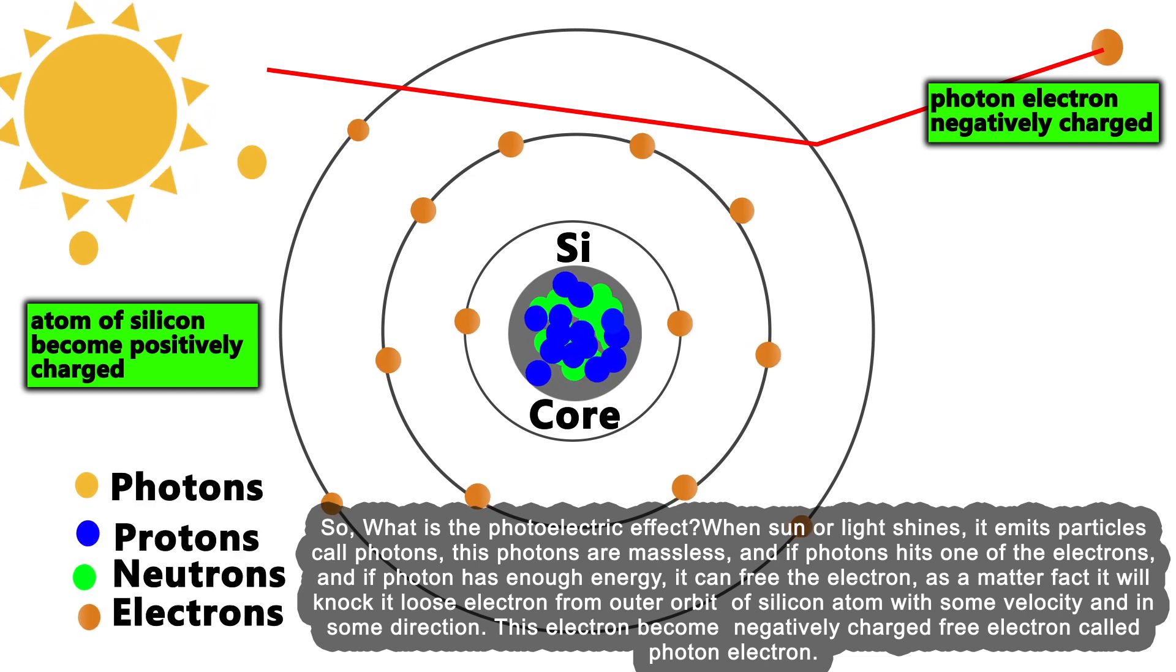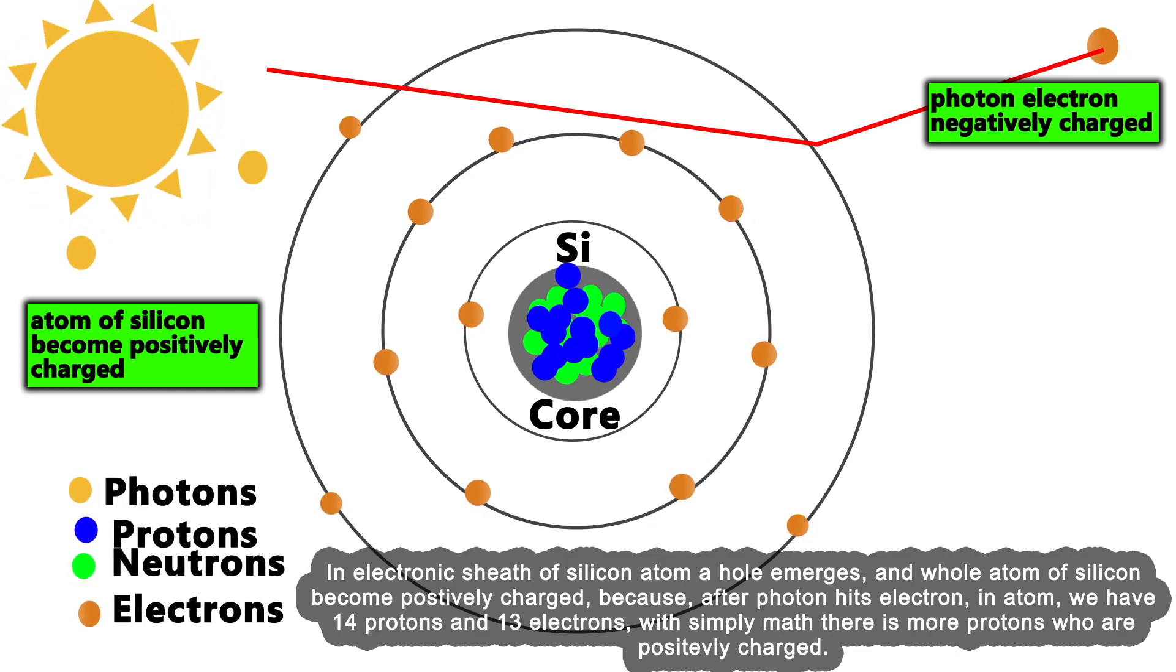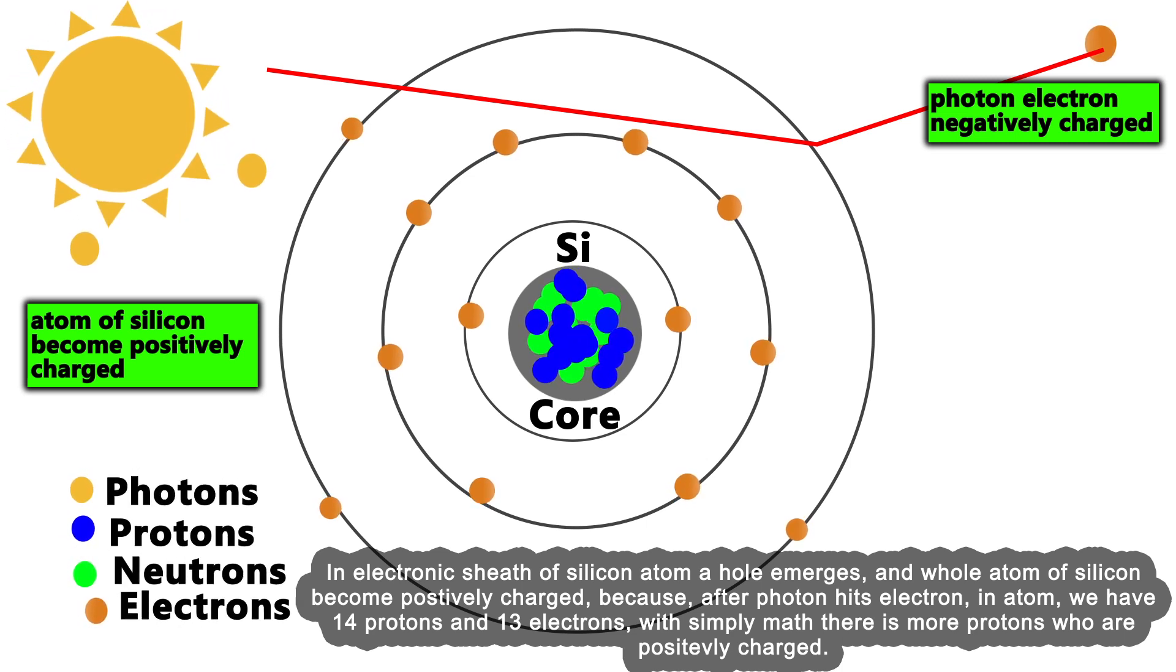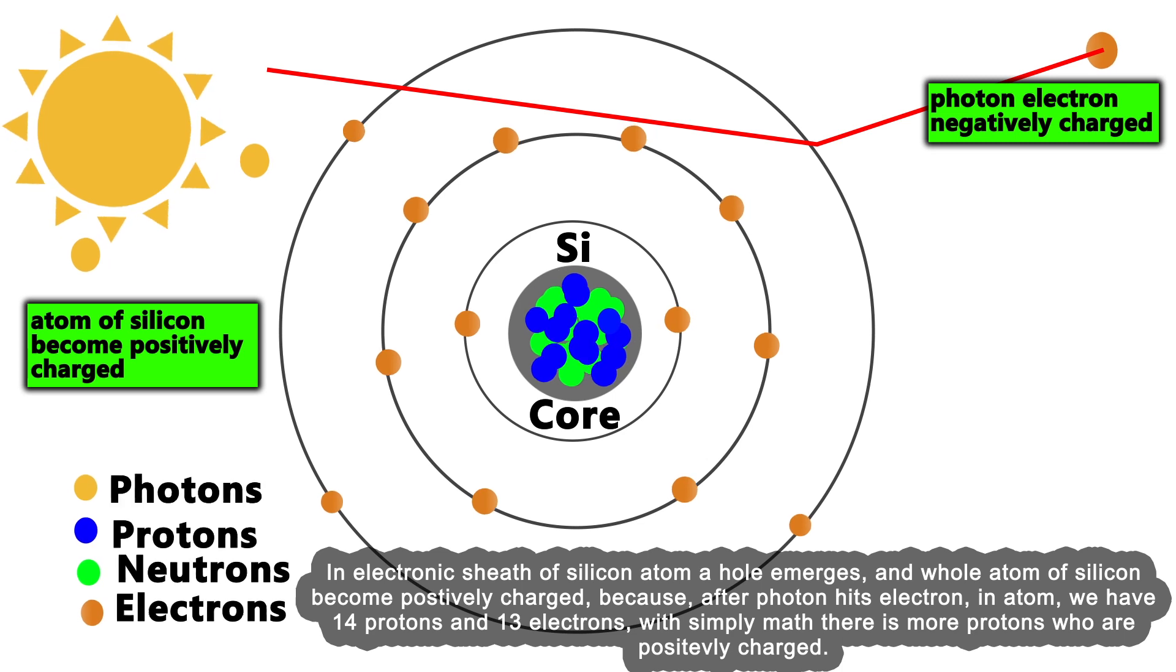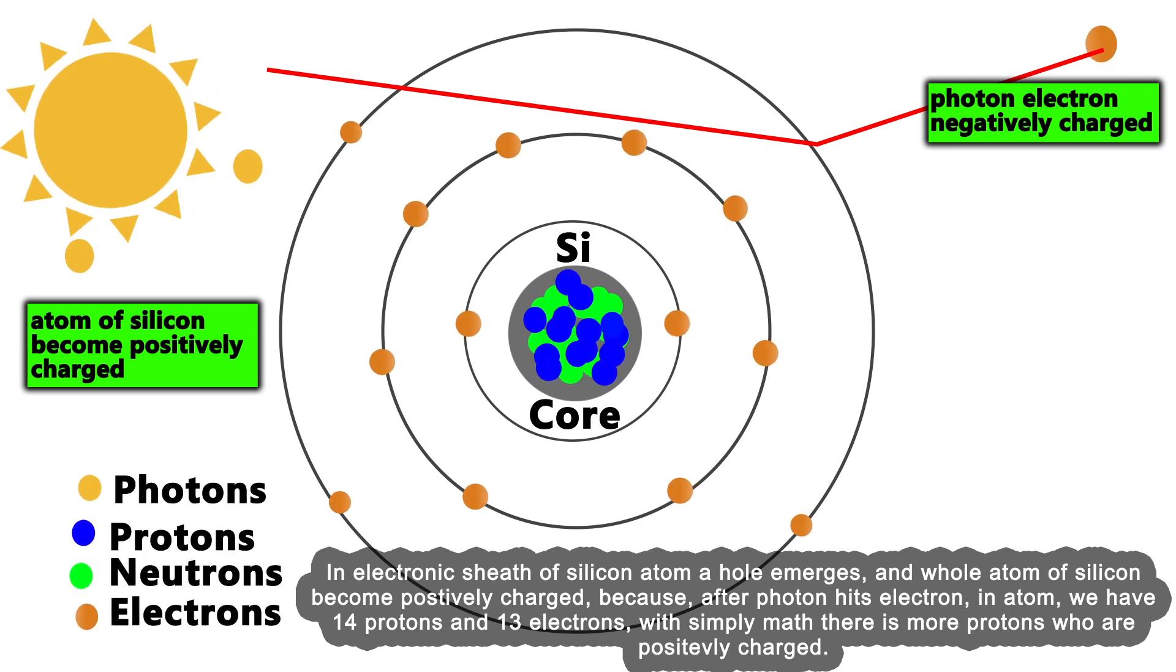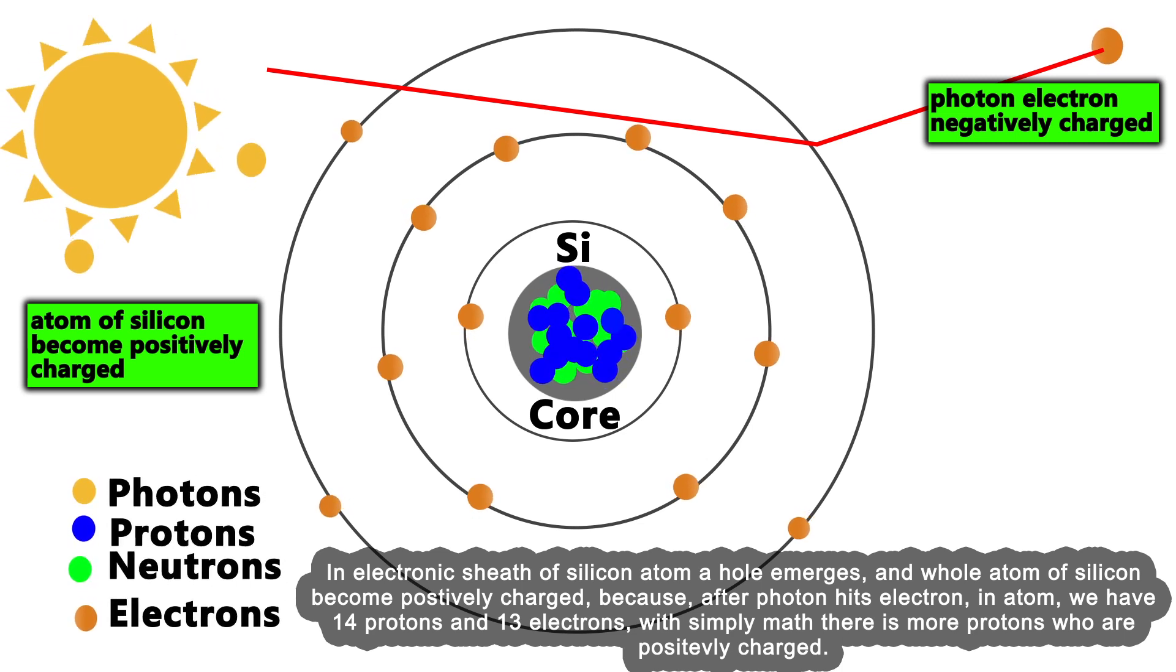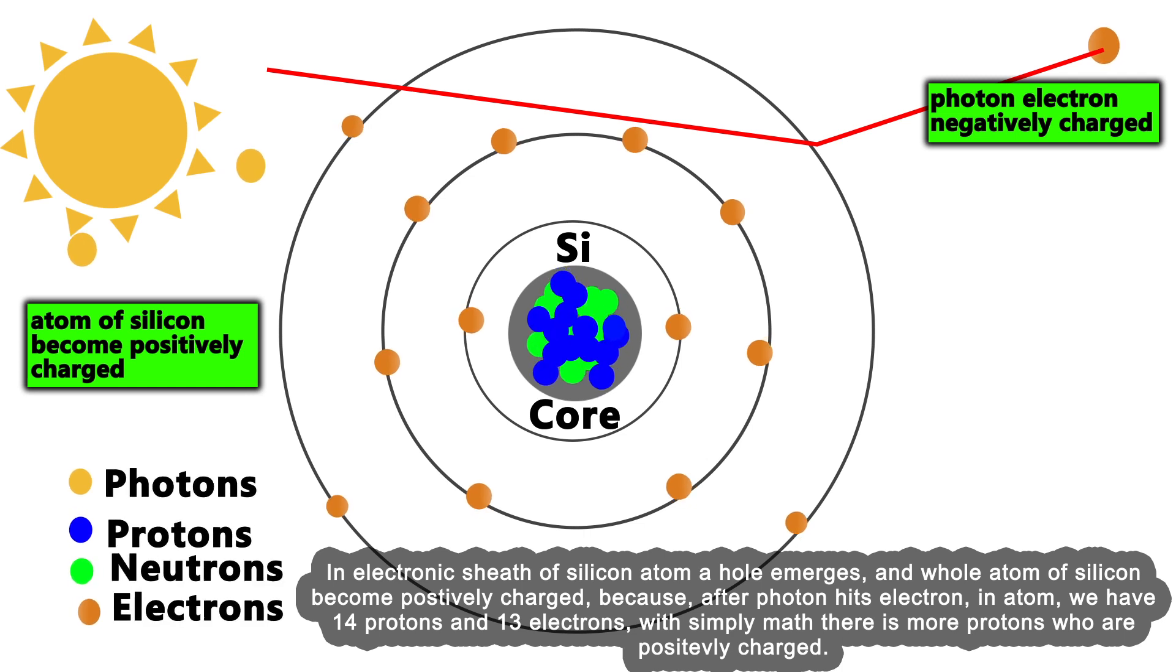In the electronic shell of the silicon atom, a hole emerges and the whole atom becomes positively charged. Because after the photon hits the electron, we have 14 protons and 13 electrons. With simple math, there are more protons, which are positively charged.